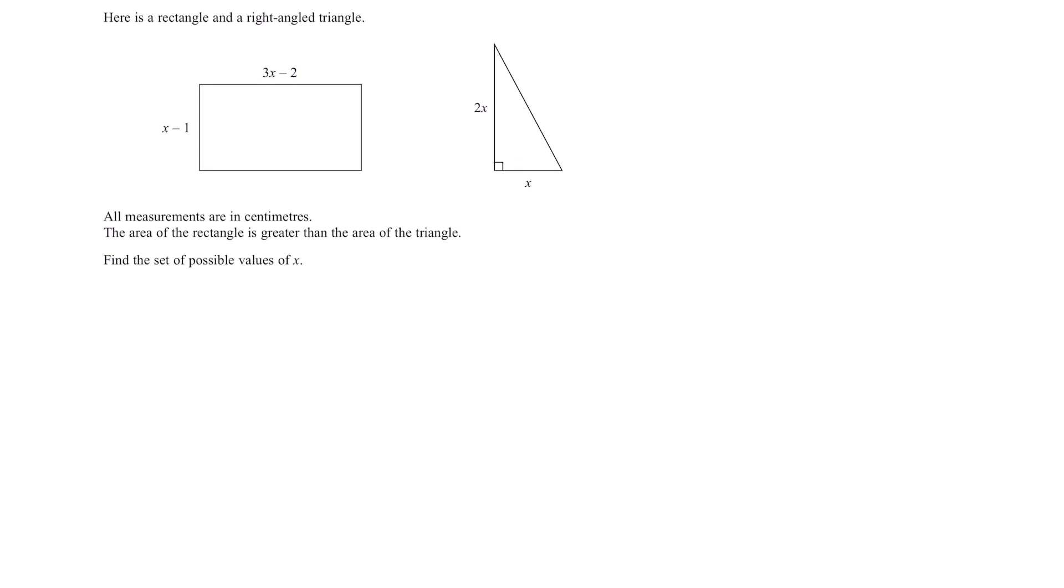Now for this question we are given a rectangle and right angle triangle with the lengths in terms of x. And we are told that the area of the rectangle is greater than the area of the triangle. So this area is greater. Even if you're unsure at this stage how to complete the question, here's something that we know how to do for sure.